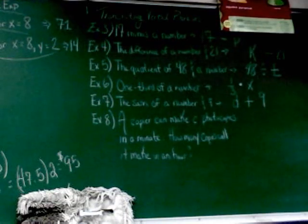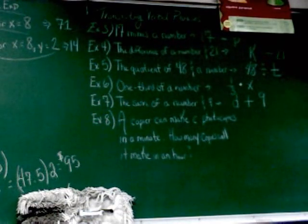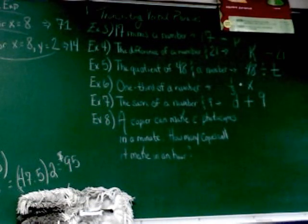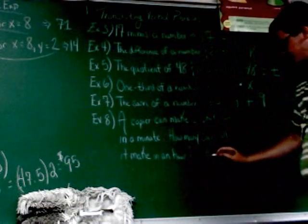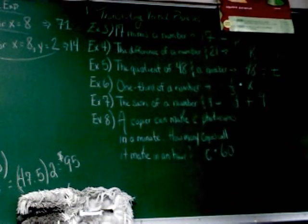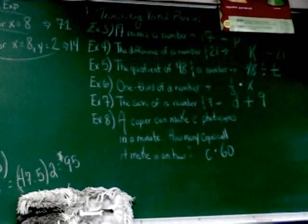All right. And the last one is a little bit more wordy, and you actually have to think about it a little bit. A copier can make C photocopies in a minute. How many copies will it make in an hour? Write me a variable expression if you think you have the correct variable expression. Kristen? C times 60. Very good. 60 minutes in an hour. You can make C copies every minute. That will tell you how many it will make in an hour.